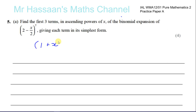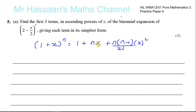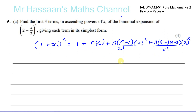1 plus x to the power of N equals 1 plus Nx plus N times (N minus 1) over 2 factorial times x squared, plus N times (N minus 1) times (N minus 2) over 3 factorial times x cubed, and it follows that same pattern. The next term will be N times (N minus 1) times (N minus 2) times (N minus 3) over 4 factorial times x to the power of 4.